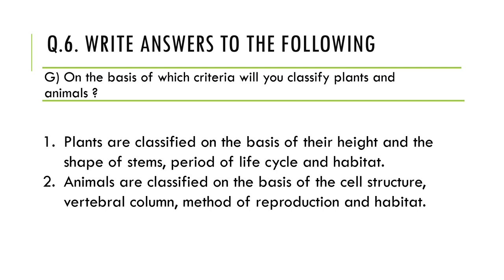Animals are classified on the basis of cell structure, vertebral column, method of reproduction, and habitat. Cell structure with its various organelles is a criteria for classification. Vertebral column — some animals have a vertebral column and some do not. Similarly, the method of reproduction and the place where the animal lives, that is habitat, are the various criteria on which animals are classified.